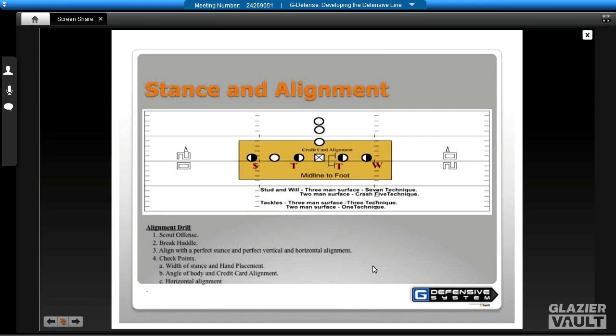We would rather be in a position where we can get off and strike. What we do in the stance and alignment drill is simple. We have a scout team break, we break the defensive pre-snap, and we align with perfect stances with both vertical and horizontal alignment. Then as they line up, we check the width of the stance, the hand placement, the angle of the body, the credit card alignment, and our horizontal alignment. And then we break.